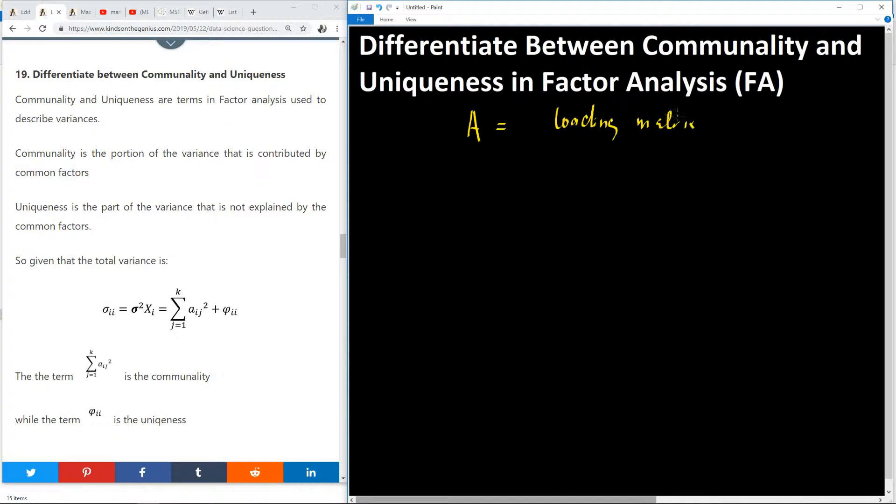The loading matrix is a matrix of coefficients that shows how each variable relates to each factor. Then we have F, which is the common factor matrix. I'll have U, which is the unique factor matrix. In factor analysis you obtain all these matrices.